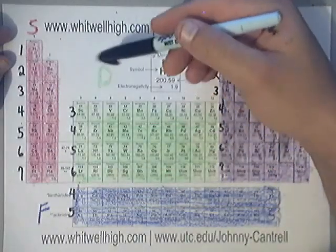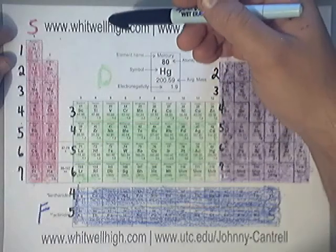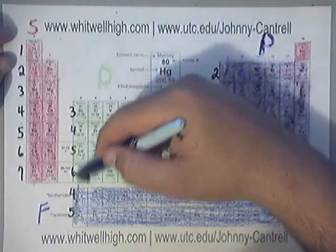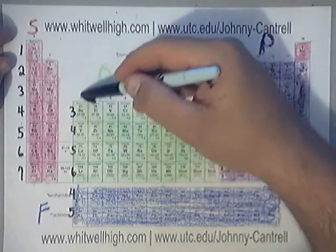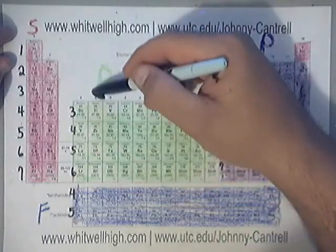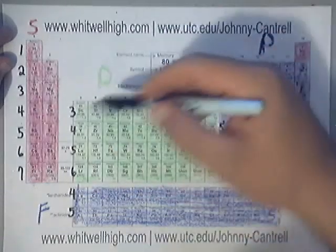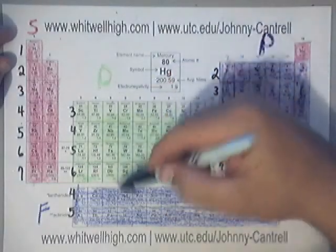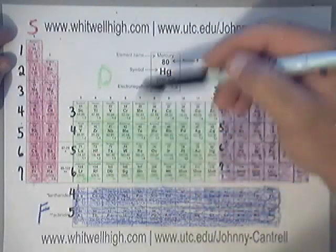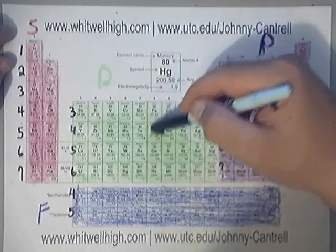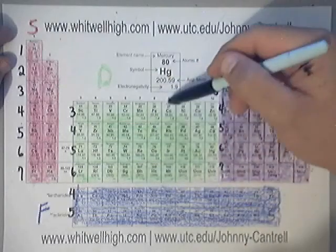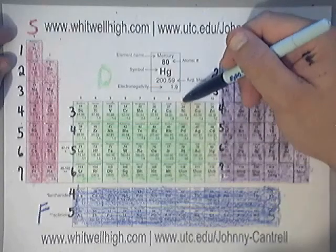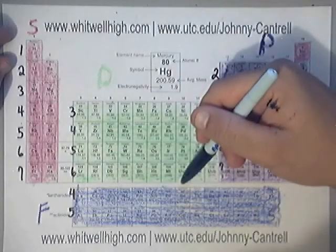A lot of chemistry teachers won't tell you this because it's way too easy. Column three has three valence electrons, column four has four valence electrons, column five has five valence, column six has six valence, column seven has seven valence electrons, column eight has eight valence electrons, column nine has nine valence electrons, and column ten has ten valence electrons.